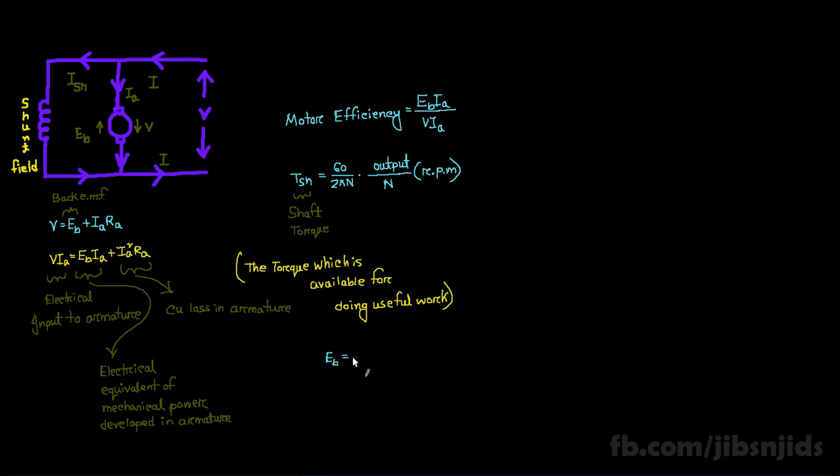This equation can give the value of back EMF, where Z is the number of conductors, N is the value of speed, P represents number of poles, and A represents the number of parallel paths, which has a particular value when the motor is wave connected and when the motor is lap connected, it is equal to the number of poles of the motor.